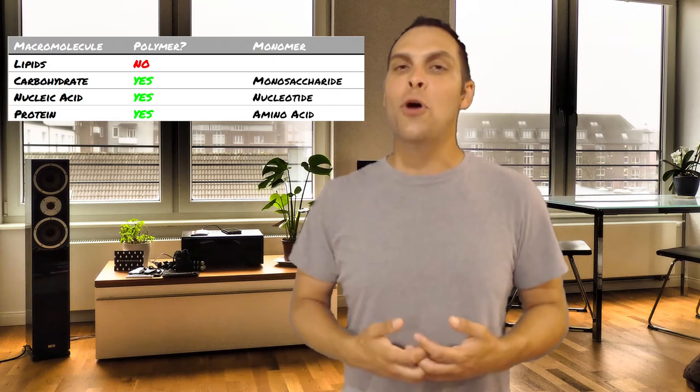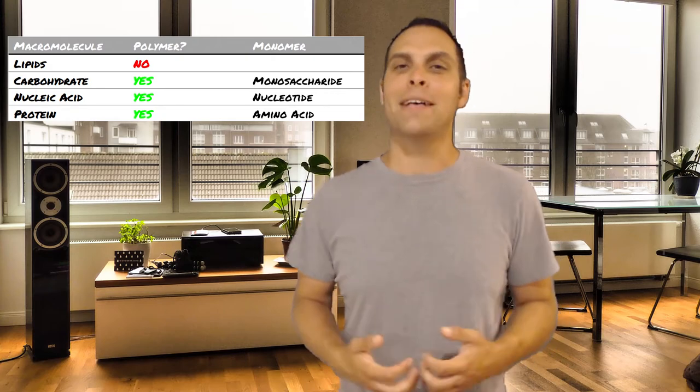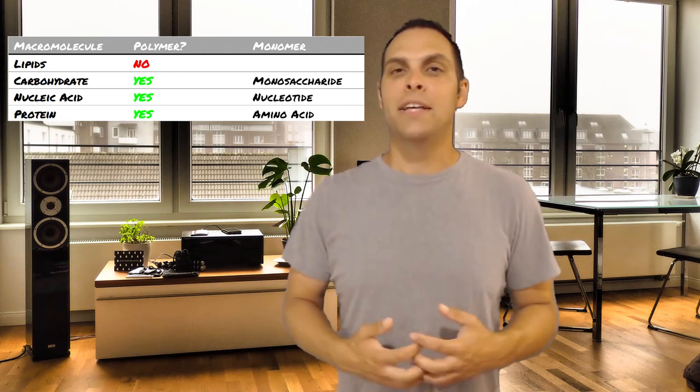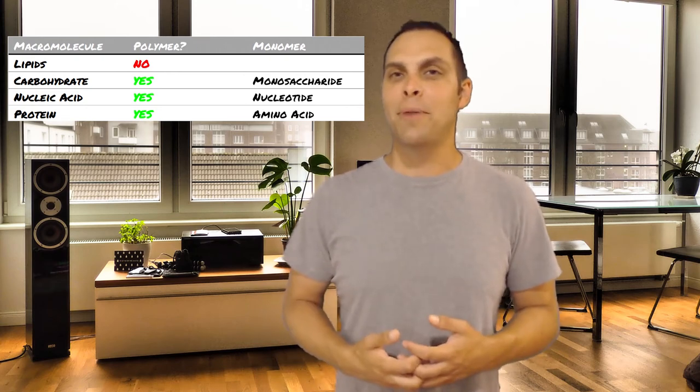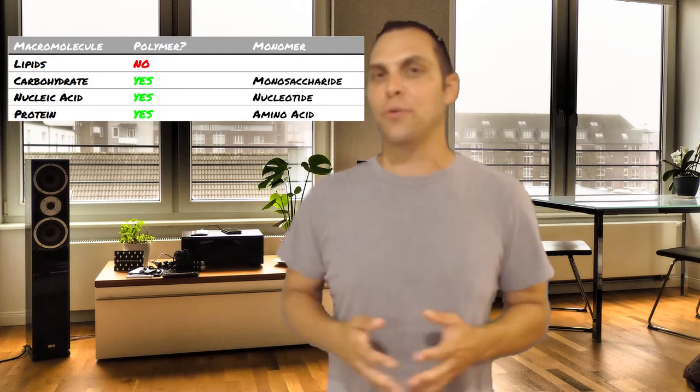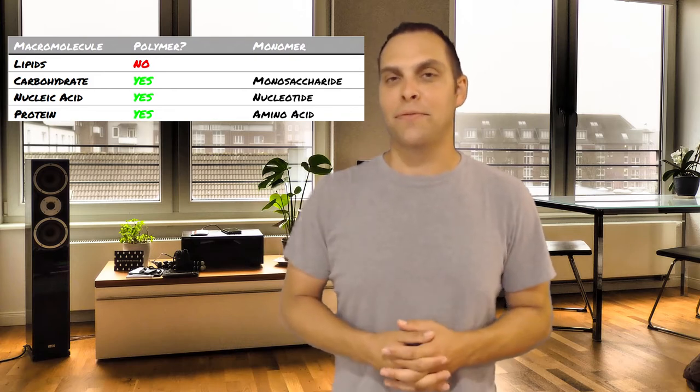Lipids, on the other hand, have no monomeric subunit. They're kind of a mess. They're not repeating and as easy to describe as, for example, a carbohydrate might be where it just consists of long chains of glucose, something like glycogen, for example.